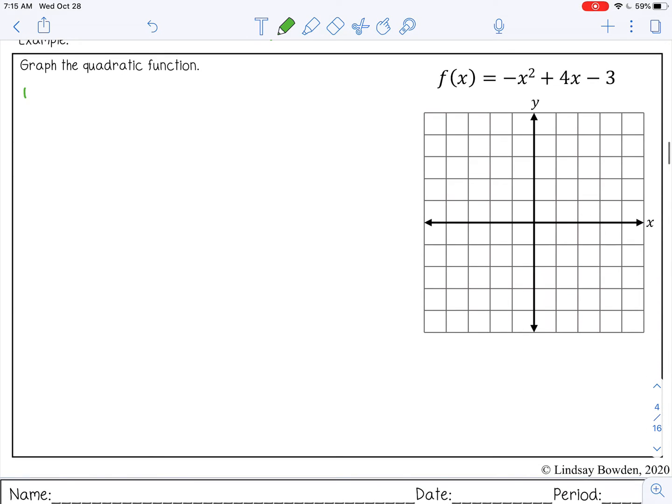Step 1, find your axis of symmetry and your vertex. So negative b over 2a. Our a is negative 1 in this case. So that would be 2.